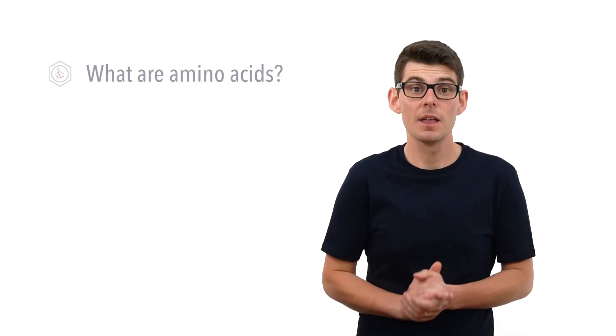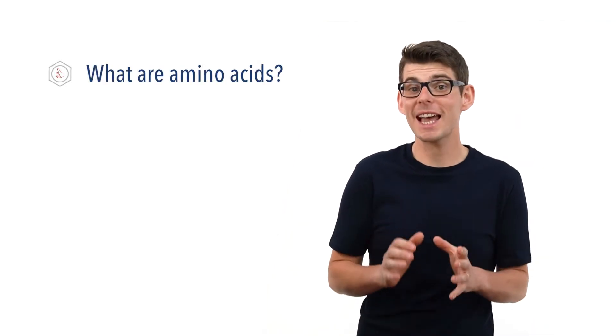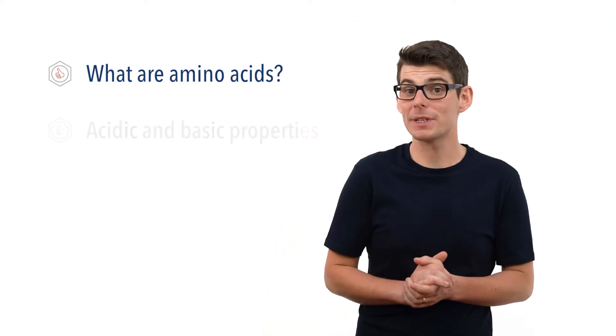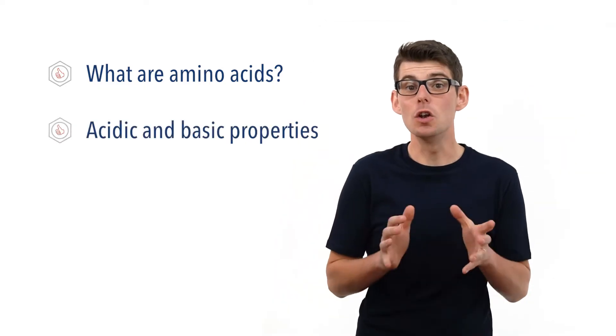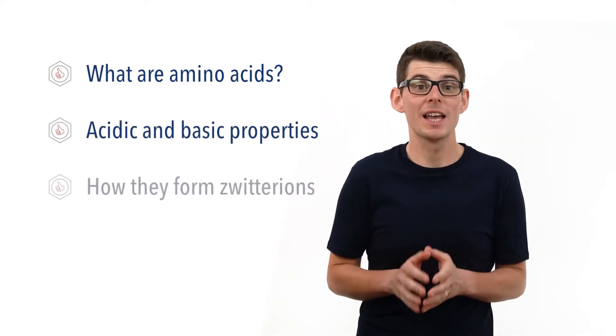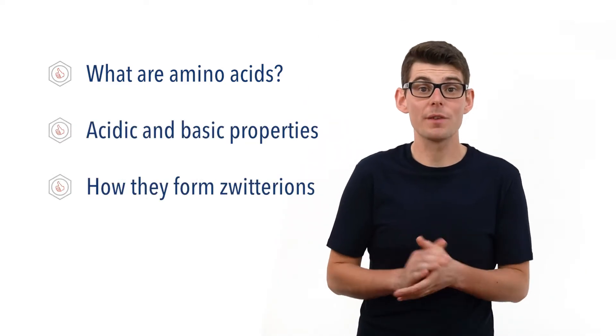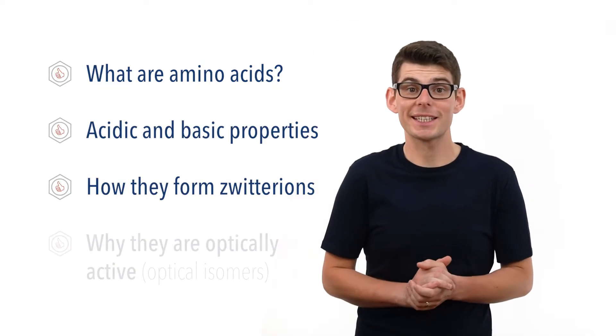Hello, Matt here from chemistrystudent.com. In this video we're going to look at amino acids and how they form zwitterions. We're going to talk about what amino acids are, their acidic and basic properties, look at how they form zwitterions, and why they are optically active.